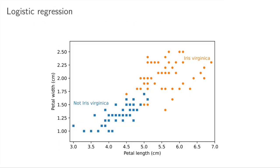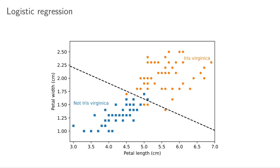For classifying whether something is an iris virginica or not, we measure the petal length and petal width. Each dot represents a measurement from a specific flower — iris virginicas on one side and non-virginicas on the other. Building a binary logistic regression classifier on these original x features and running gradient descent gives us a decision boundary that clearly separates the two classes.